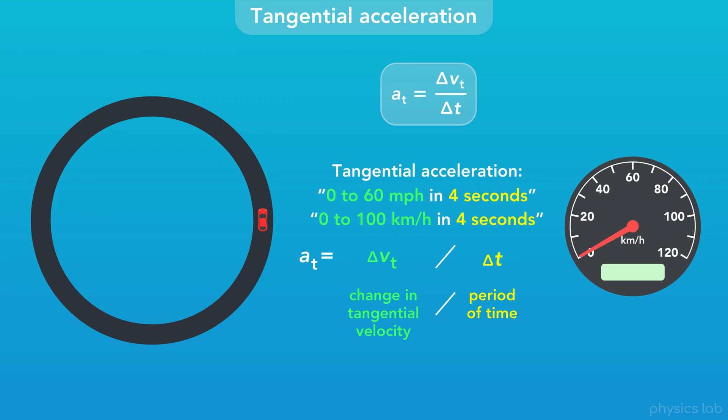This tangential acceleration of a car driving around a circular track is not that different from a car on a straight road. The tangential acceleration is just the acceleration along the path that it's following.